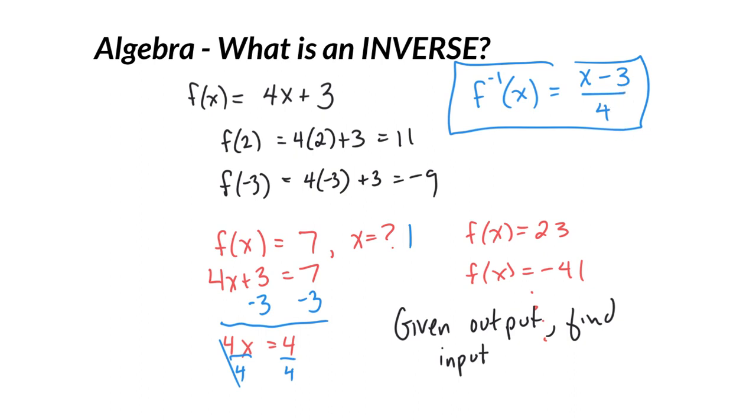So we can just plug in 23 minus 3 divided by 4, negative 41 minus 3 divided by 4. In this case, 7 minus 3 divided by 4. We have a nice quick formula to generalize, and that is what an inverse is - that generalized solve for x formula. If this video helped you, please like and subscribe for more math help.